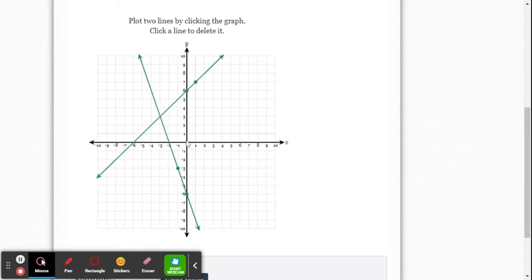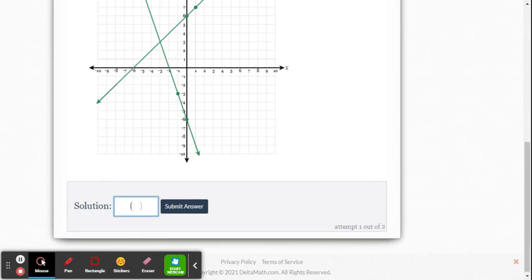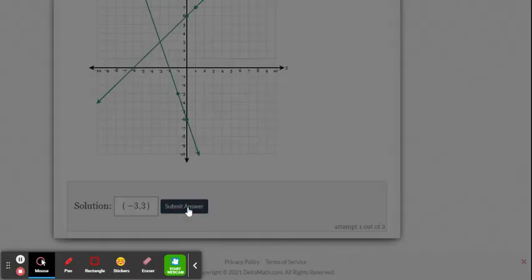We've got to read that point of intersection. It looks like x is negative 3, y is 3. Down below in Delta Math, it says solution. We're going to type it in: parentheses, negative 3, comma 3. And we hit submit the answer.